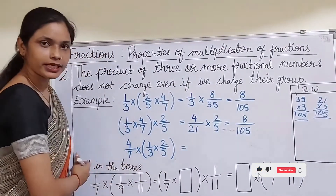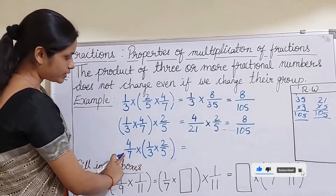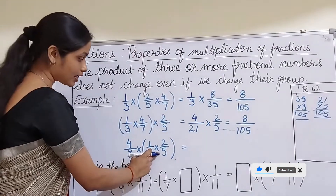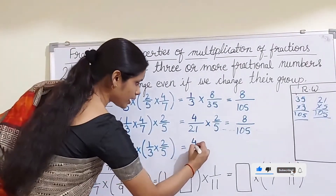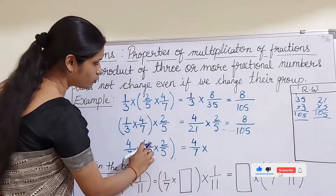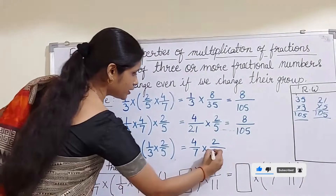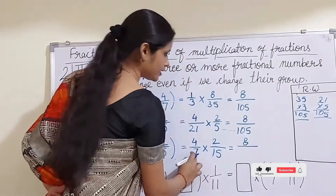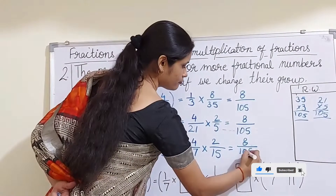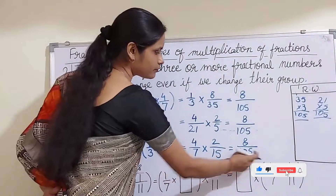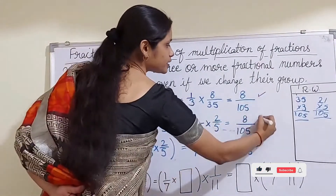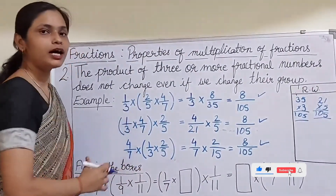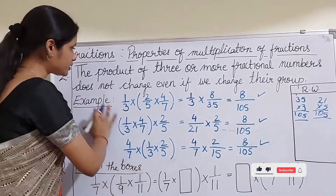One more rearrangement: this time 4/7 is outside the bracket and (1/3 × 2/5) is inside. Solve the bracket: 1 × 2 = 2 in the numerator, 3 × 5 = 15 in the denominator. Then 4/7 × 2/15 gives 4 × 2 = 8 in the numerator and 7 × 15 = 105 in the denominator. In all three cases the product is the same — it does not change even if we change the grouping.